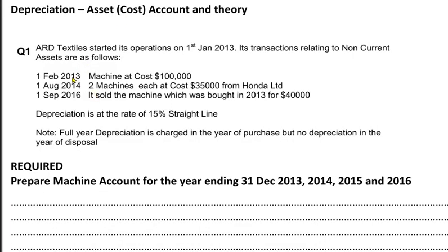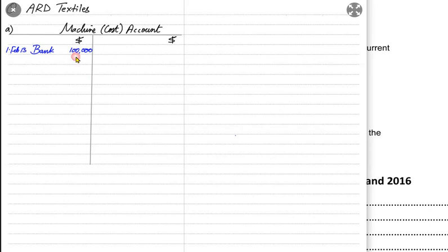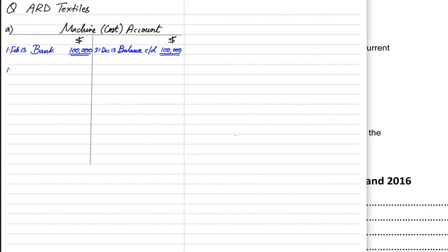Now as you can see, in 2013 there are no other transactions — there was only one transaction for 100,000. At the end of the year we need to balance off all the accounts, so the shorter side would be balance CD — balance carried down, which is the closing balance. This balance carried down would become balance brought down at the start of the next accounting period. After December 2013 comes January 2014, so this is balance BD.